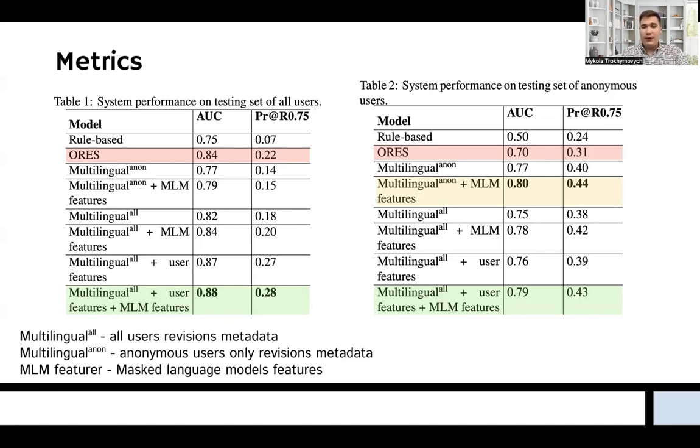The same is true for anonymous users. However, there is an important insight: the model trained on anonymous-only user revisions is best for anonymous-only users, but the difference from the best configuration for all users is not big.